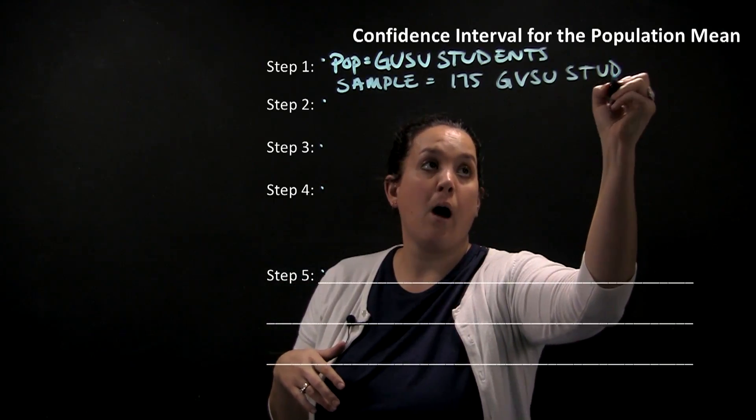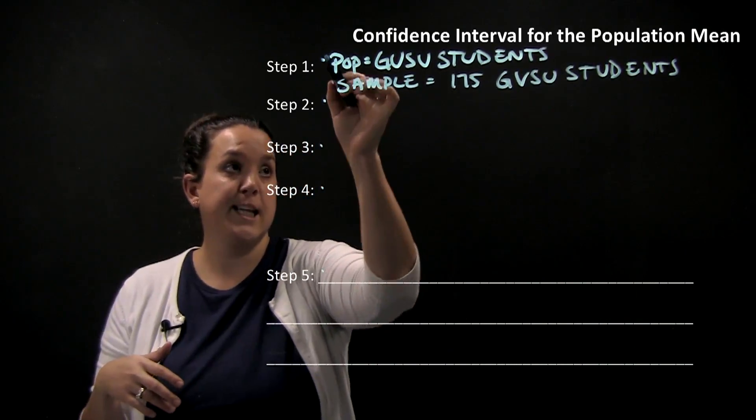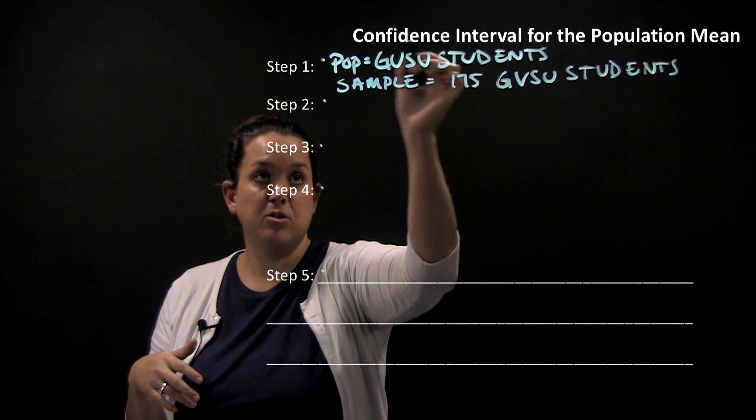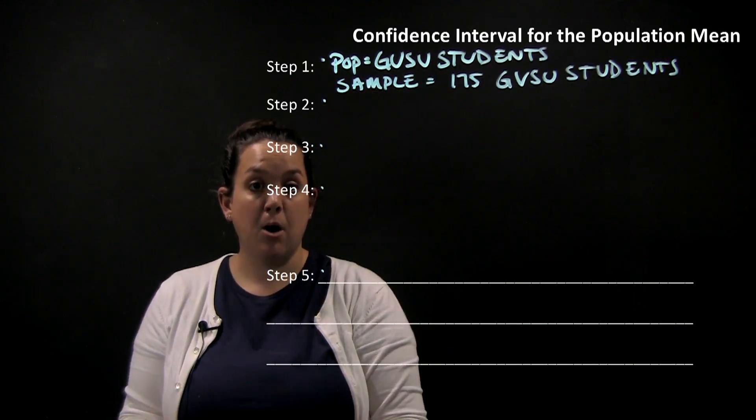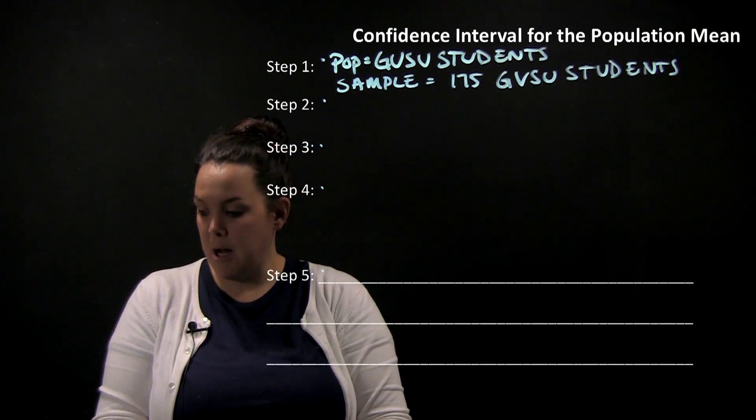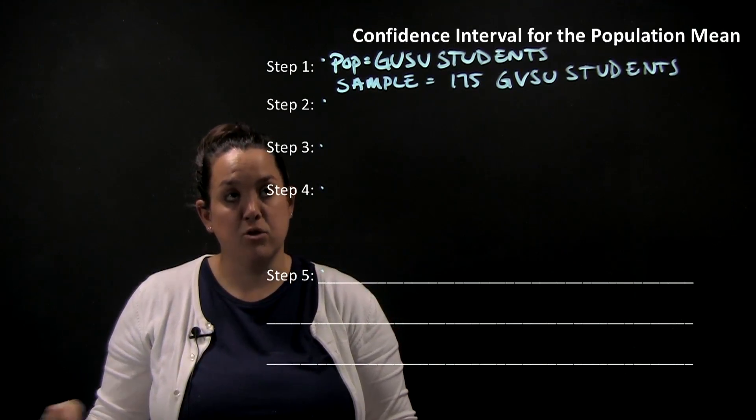Remember that our goal is to identify that large group that we want to make an inference on. So here it's going to be GVSU students as a whole student body. And then we have to identify which group is going to help us make that inference on that population. So here we're going to use 175 GVSU students.